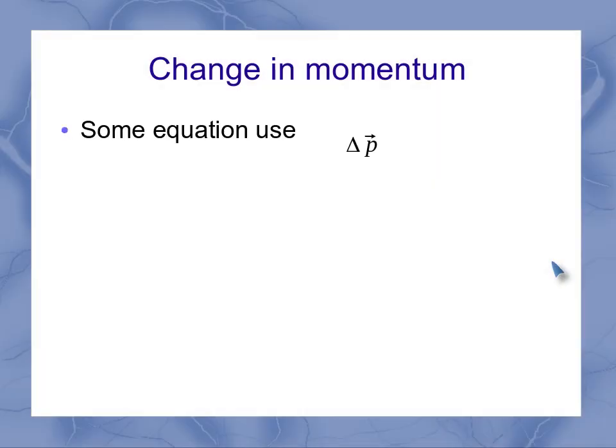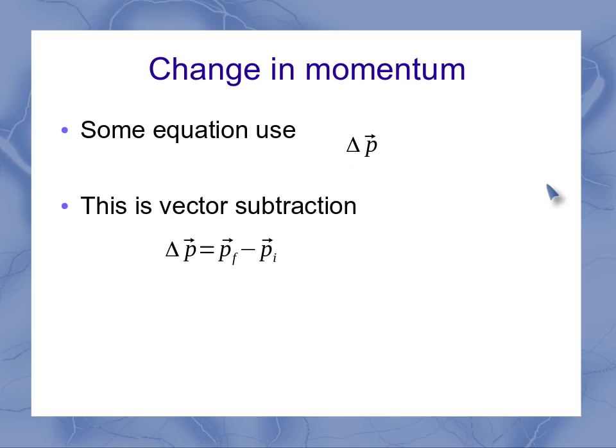What about change in momentum? Some of the equations we're going to be working with are going to use this delta p, or the change in momentum. In that case, I need to keep in mind that this is a vector subtraction. So direction matters when I look at my final momentum compared to my initial momentum.